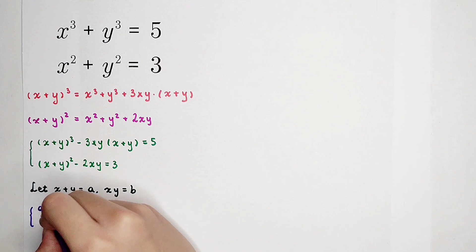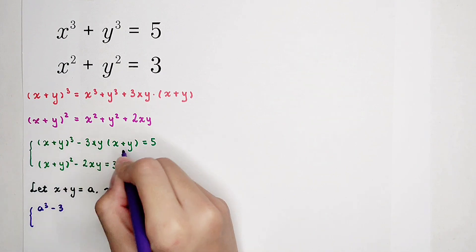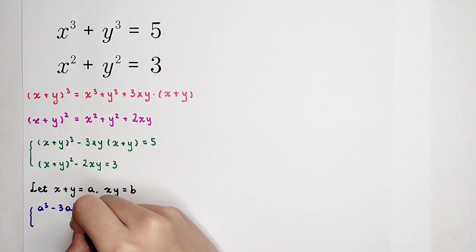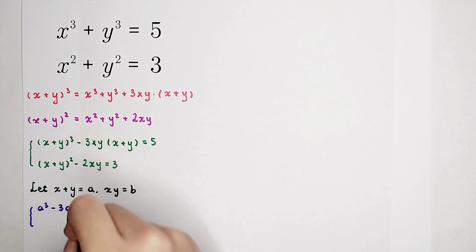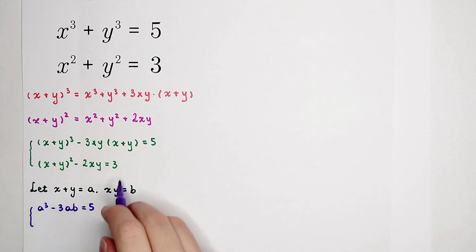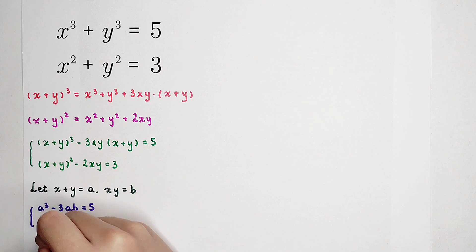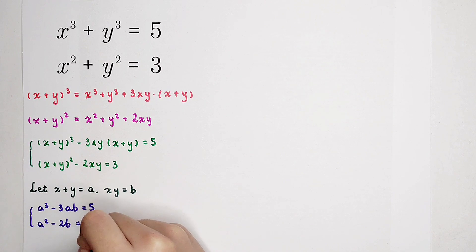The first equation becomes: a cubed minus 3b times a — which is 3ab — equals 5. The second equation becomes: a squared minus 2b equals 3.